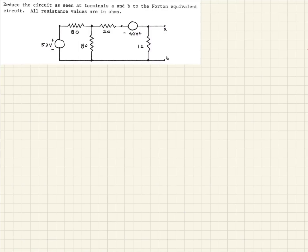In this example, we're given a simple circuit with two loops. We have two voltage sources: a 52 volt and a 40 volt. They're asking us to reduce this down to the Norton equivalent. A Norton equivalent is what current source in parallel with a resistor can we put in place between terminals A and B that gives the same responses. So let's see how we go about this.